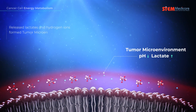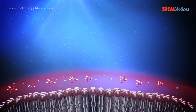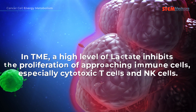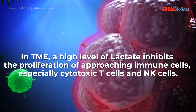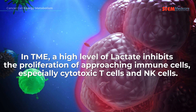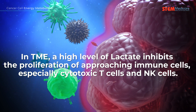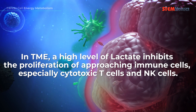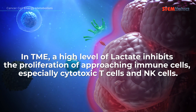Released lactates and hydrogen ions form a tumor microenvironment with high lactate concentration and low pH. In the tumor microenvironment, a high level of lactate inhibits the proliferation of approaching immune cells, especially cytotoxic T cells and NK cells.